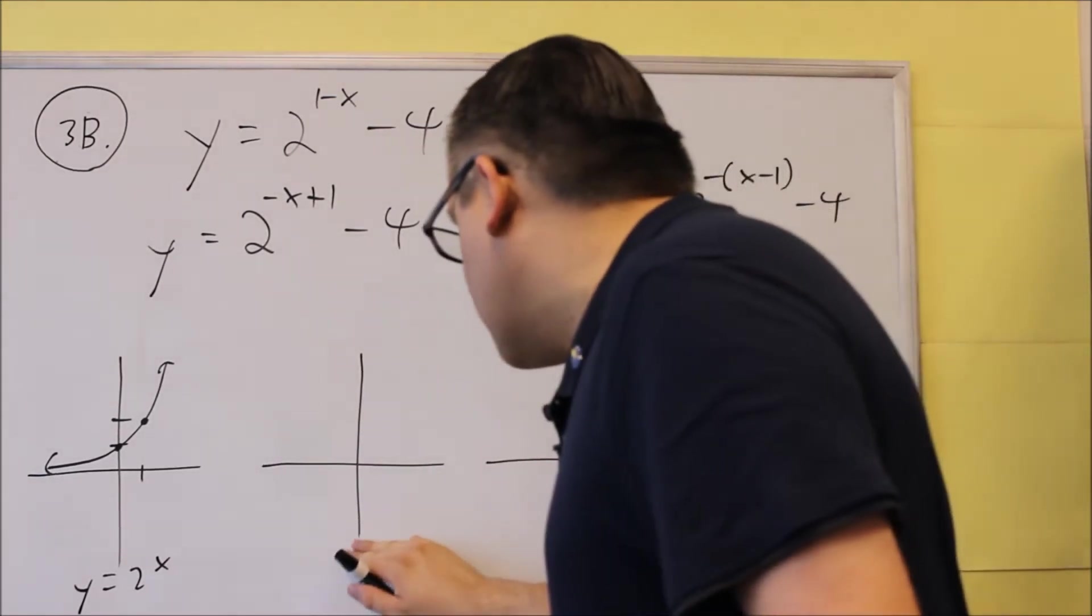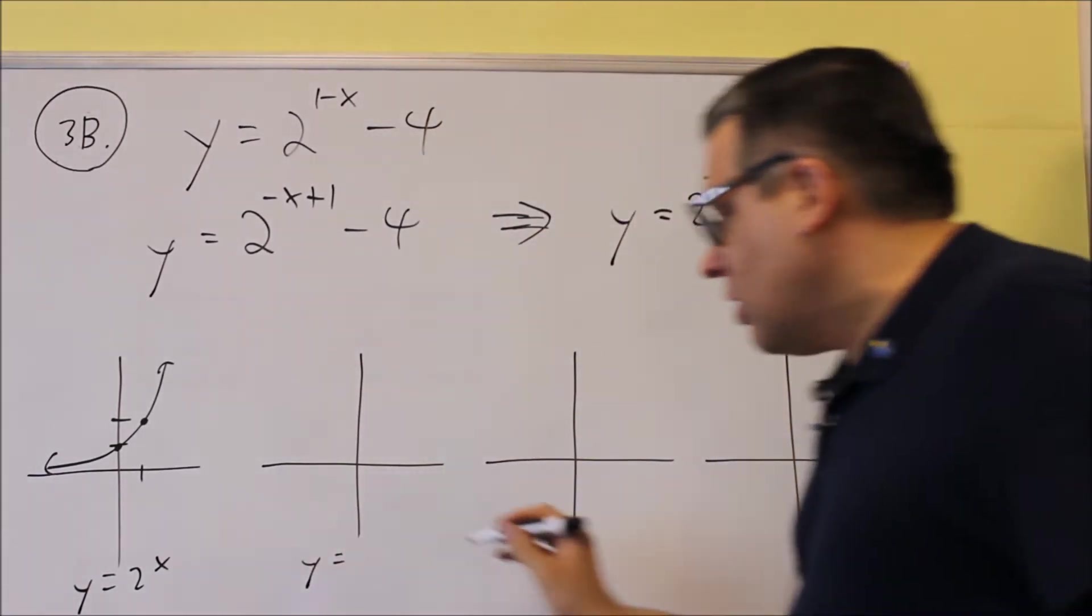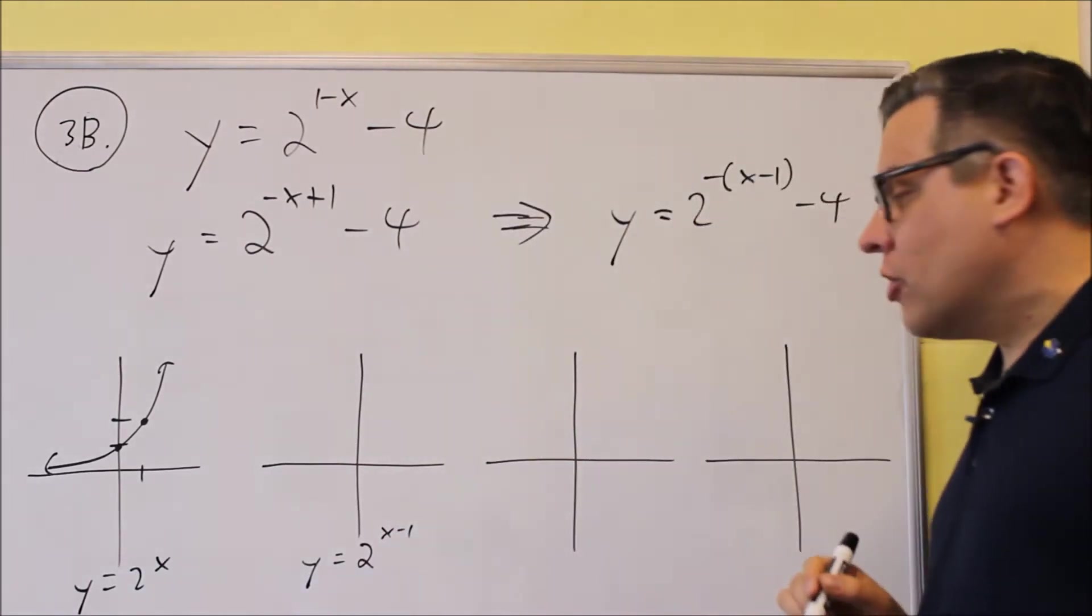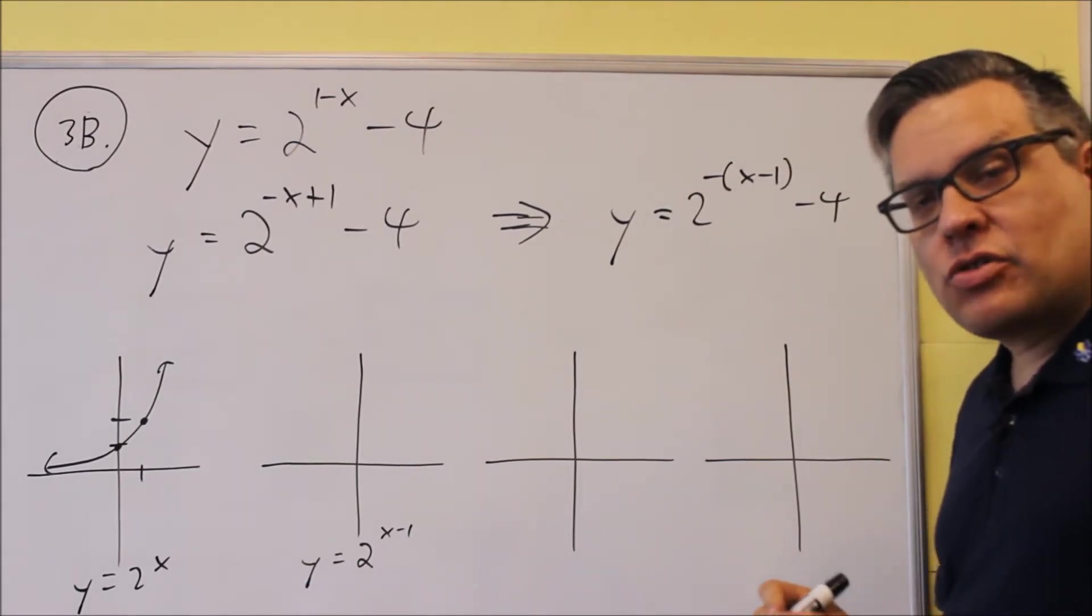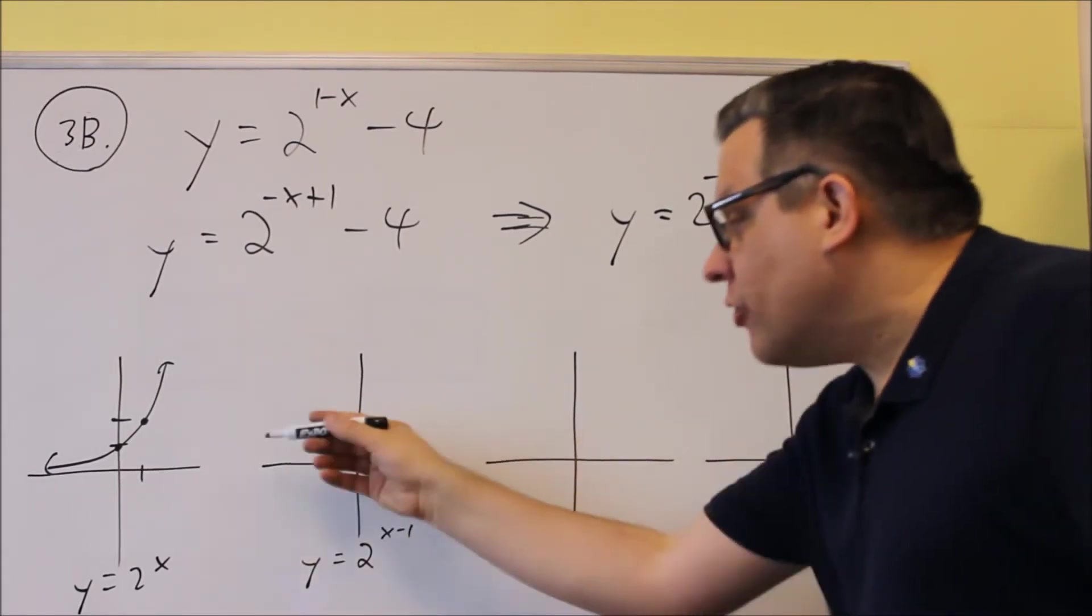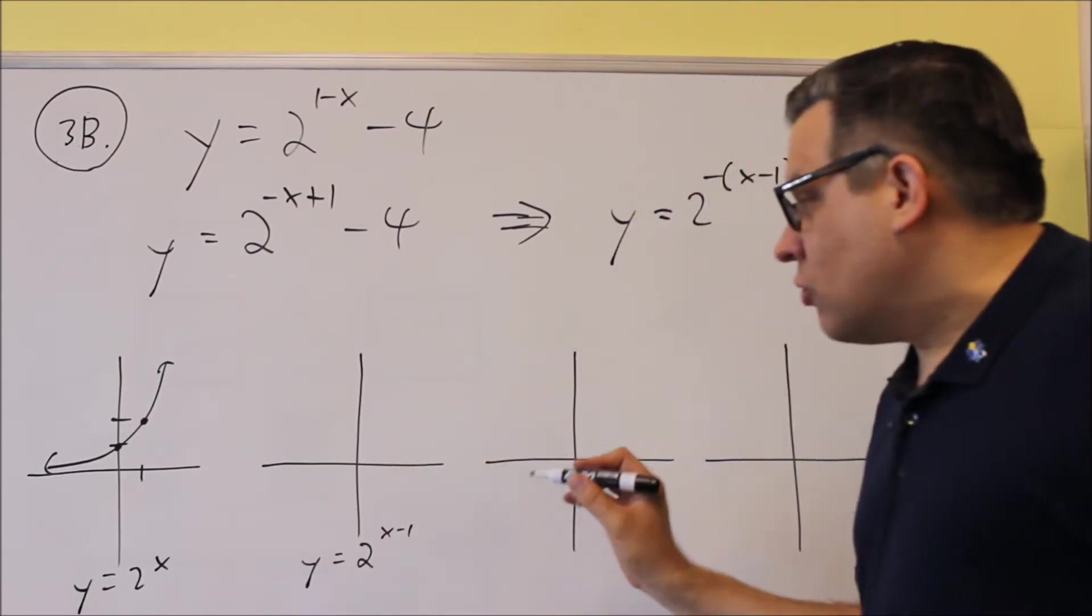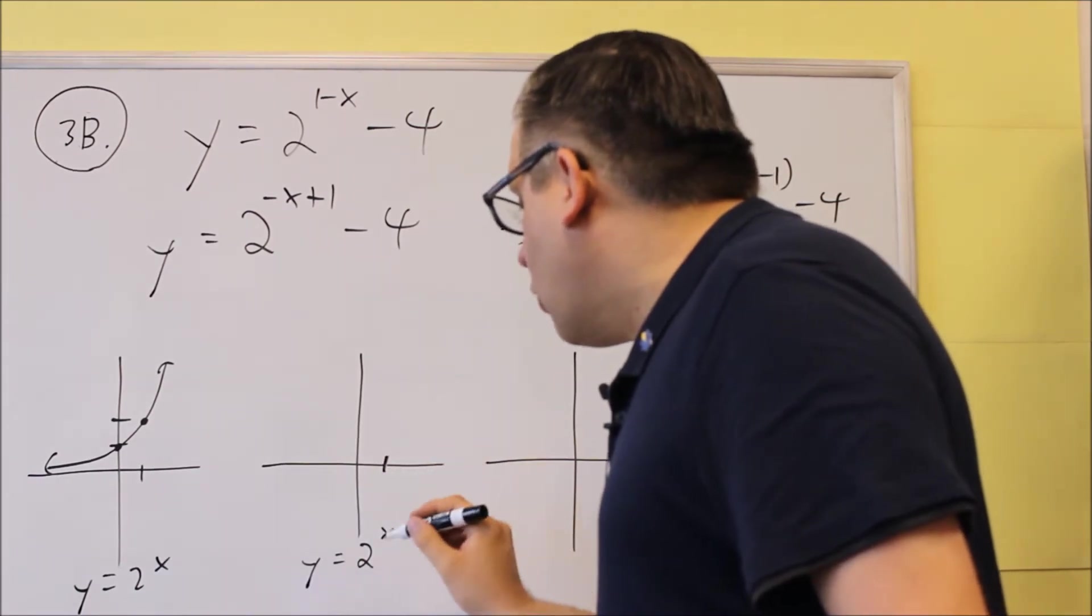Now the next one I'm going to do is I'm going to apply the shift. So I'm going to do 2 to the x minus 1. So I'm just going to do that part first. So minus means that we're shifting the graph one place to the right. If there was a plus here, I'd be moving it to the left. But since there's a negative there, we move it to the right.